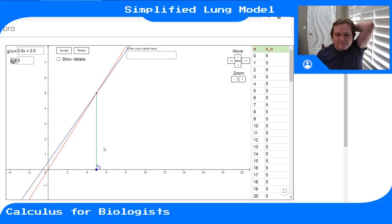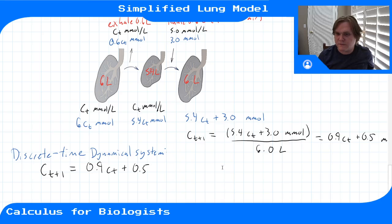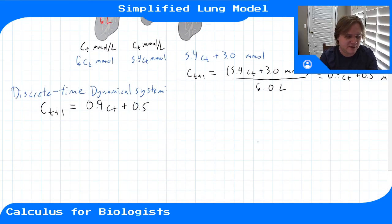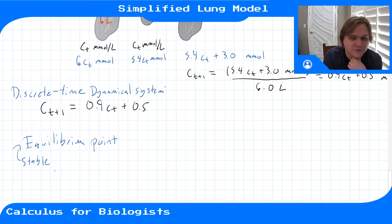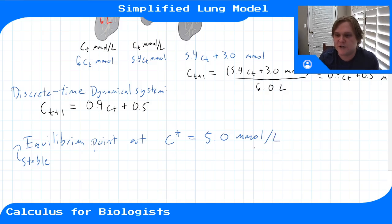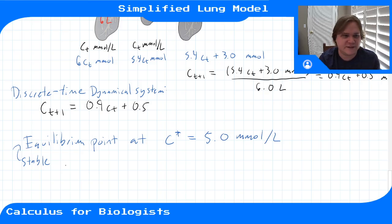So what does 5 represent back in our original system? The equilibrium point we saw via cobwebbing is a stable equilibrium point, since trajectories that started near it went towards it. There is a stable equilibrium point for our system at C* = 5.0 millimoles per liter. This is the concentration at which the discrete-time system gives the same output as the input — once you're there, you stay there.